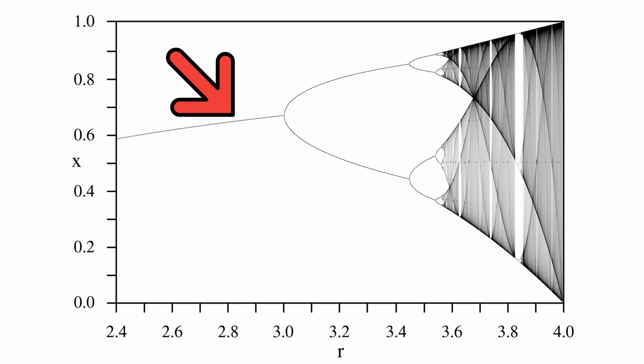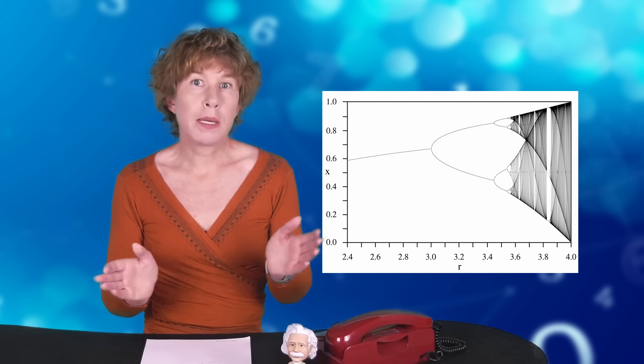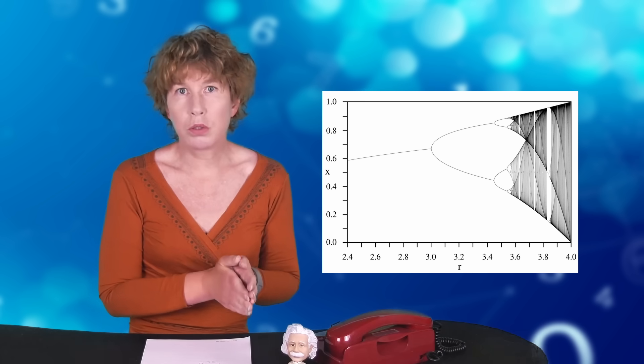But when R becomes larger than 3, that splits into 2, meaning that the sequence ends up going back and forth between two values. Increase R further and you get more values and then at some point, that's approximately R equals 3.57, you have the onset of chaos with occasional windows of periodic orbits. The amazing thing here is that such a simple rule can give such a complex result.